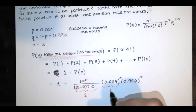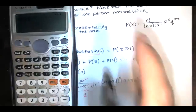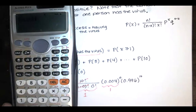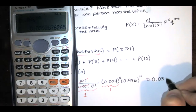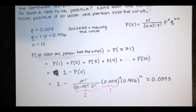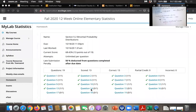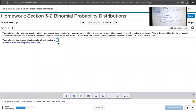So you have one minus 0.996 raised to the 10th, and we get approximately 0.0393. Rounding to four decimal places gives 0.0393, and rounding to three decimal places as required gives 0.039.